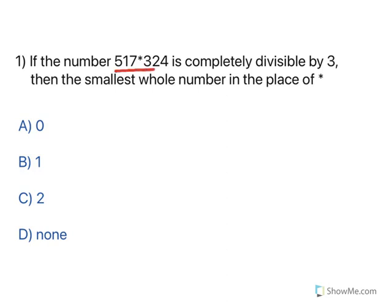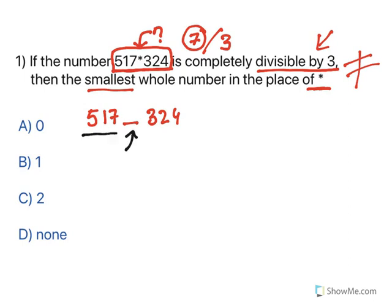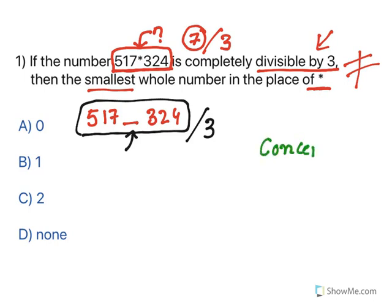Now, if the number 517*324 is completely divisible by 3, find the smallest whole number in place of the star. You need to find what digit to put here so that this 7-digit number will be divisible by 3. This requires a concept called the divisibility concept — by looking at a number you should be able to tell whether it is divisible by a particular digit or not.